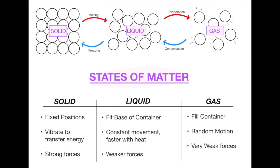States of matter — solid, liquid, and gas — and it's really important to know the four words that connect them. Solid to liquid: you melt something. To think of it simply: take an ice cube — when it becomes water, the ice has melted. If you turn that water into gas (steam), it's evaporating. You can turn steam back into a liquid, which is condensation, and then the liquid back into an ice cube by putting it in the freezer — so it freezes.